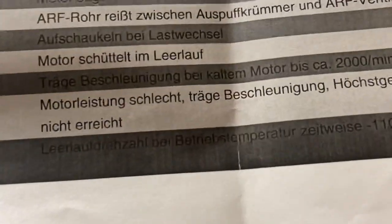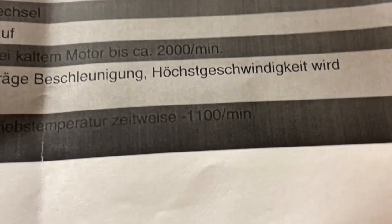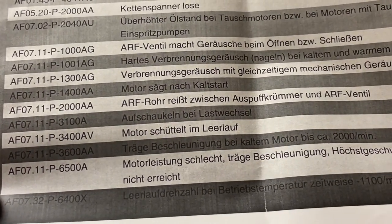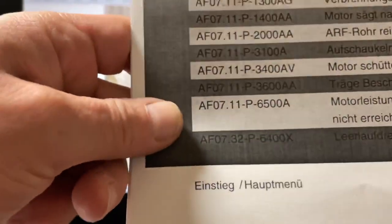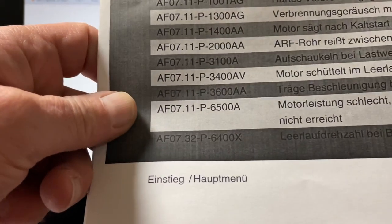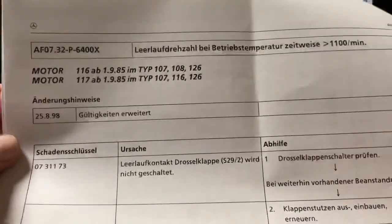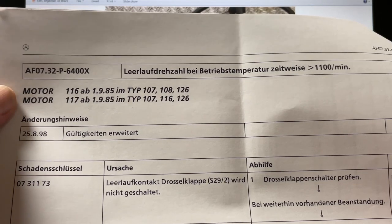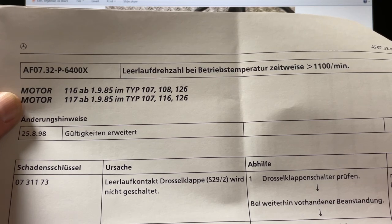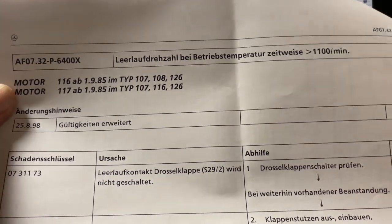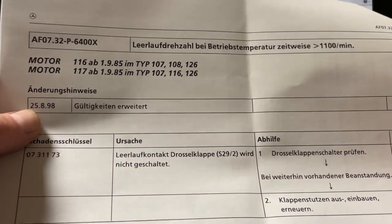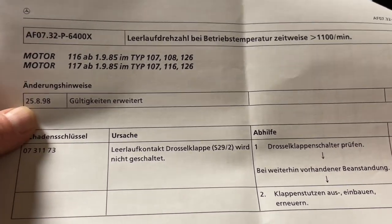All the way on the bottom, you can hardly read this. It says Leerlaufdrehzahl Betriebstemperatur Zeitweise 1100 RPM. That means the idle speed RPM at operating temperature is intermittently at 1100 RPM. Service bulletin AF07.32P-6400X. This is the actual service bulletin. It's applicable to engine 116 beginning September 1st 1985, 107, 108, 126, and the 117 engine beginning September 1st 1985, 107, 116, 126. It was finalized June 1st of 1990 and made permanent on August 25th 1998 when the problems increased.